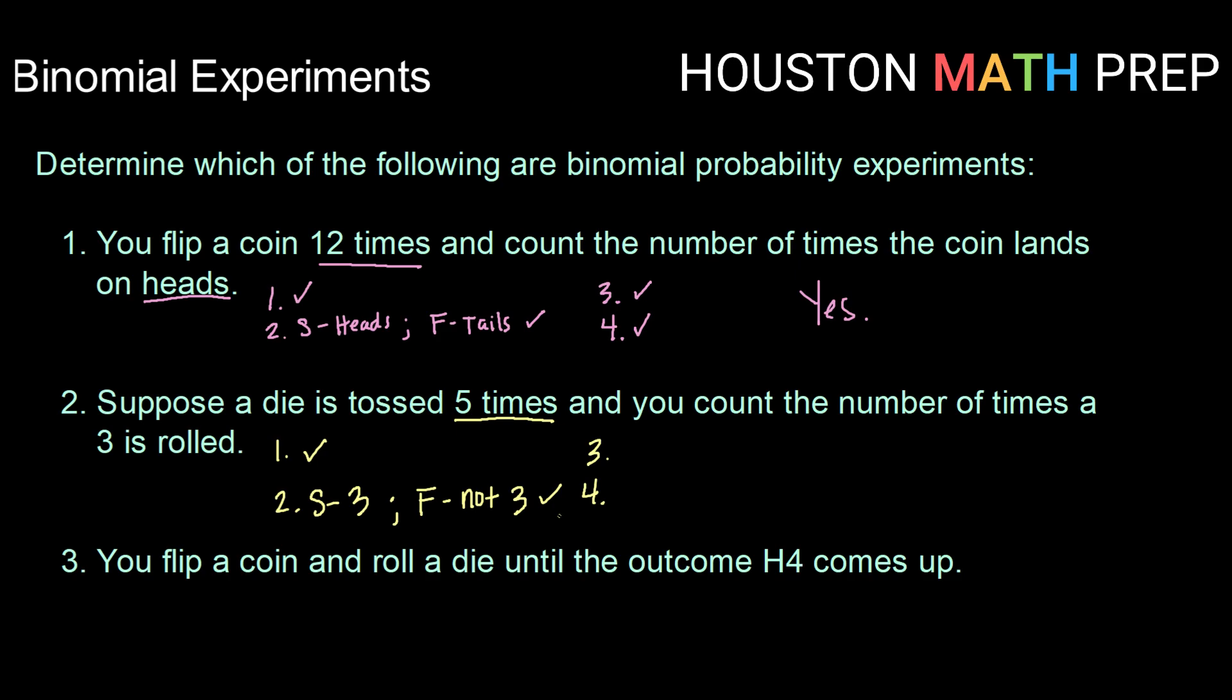For our third criteria, is the probability of success constant? Well, as we roll the die, the probability of rolling a three is one out of six every single time that we roll that die. So yes, our probability of success is constant.